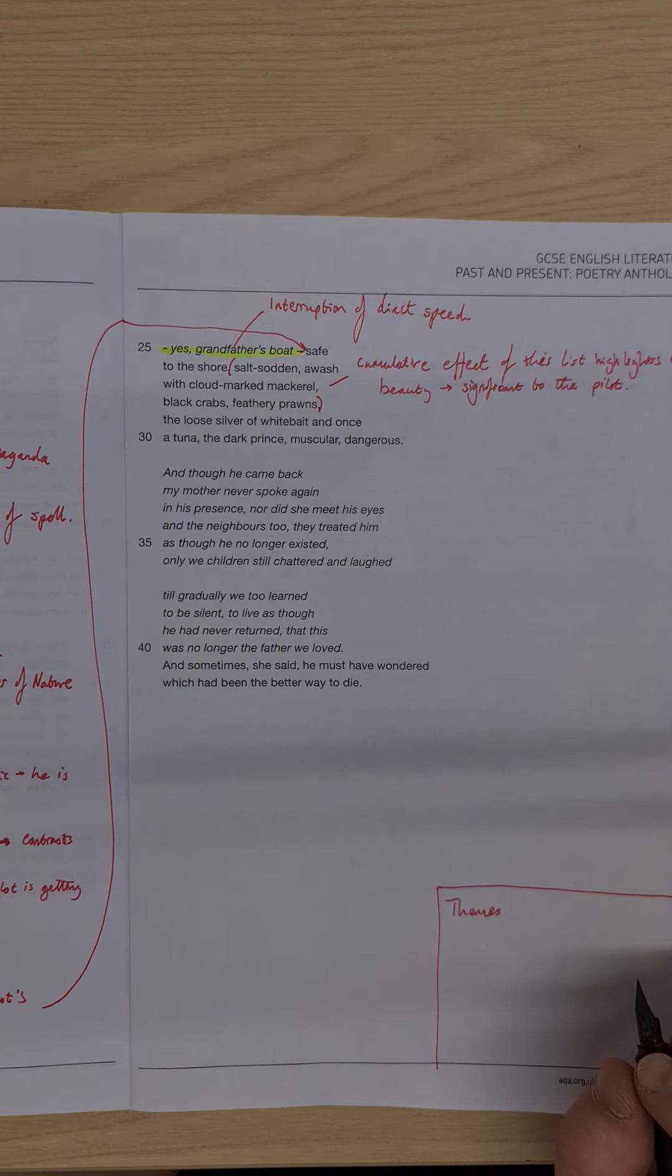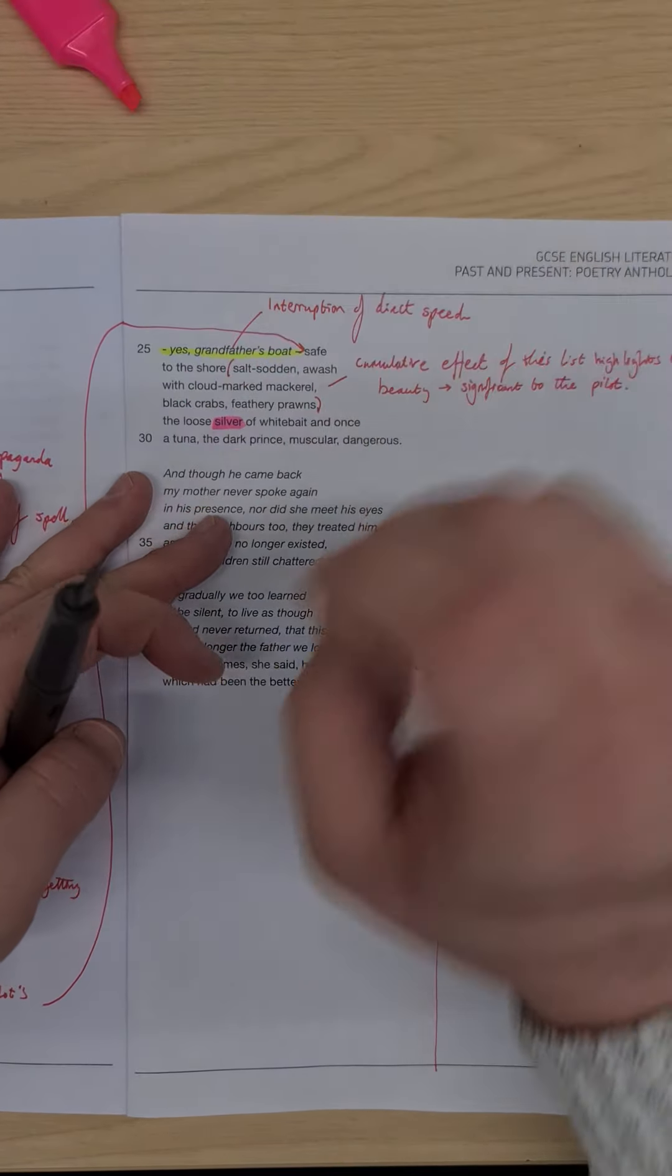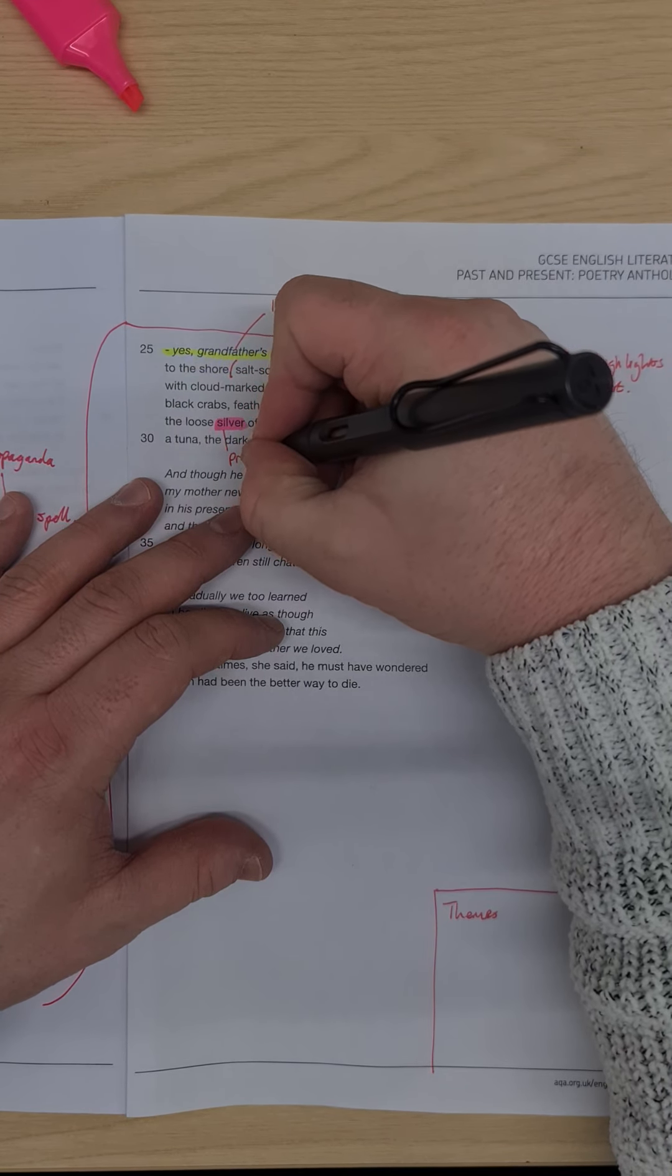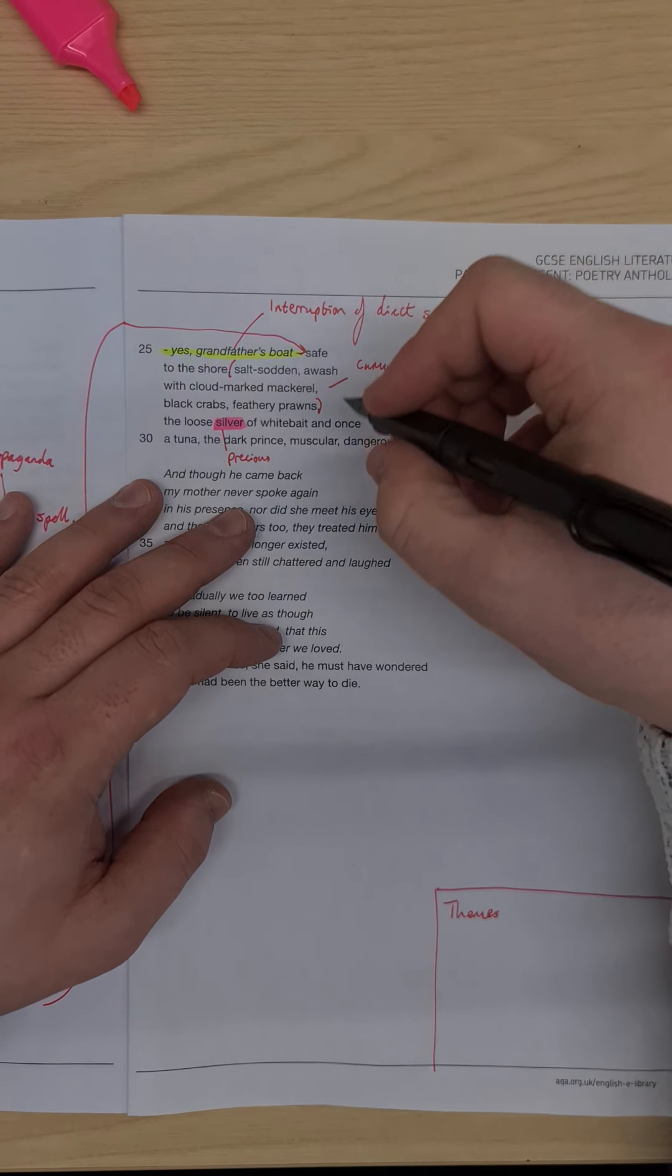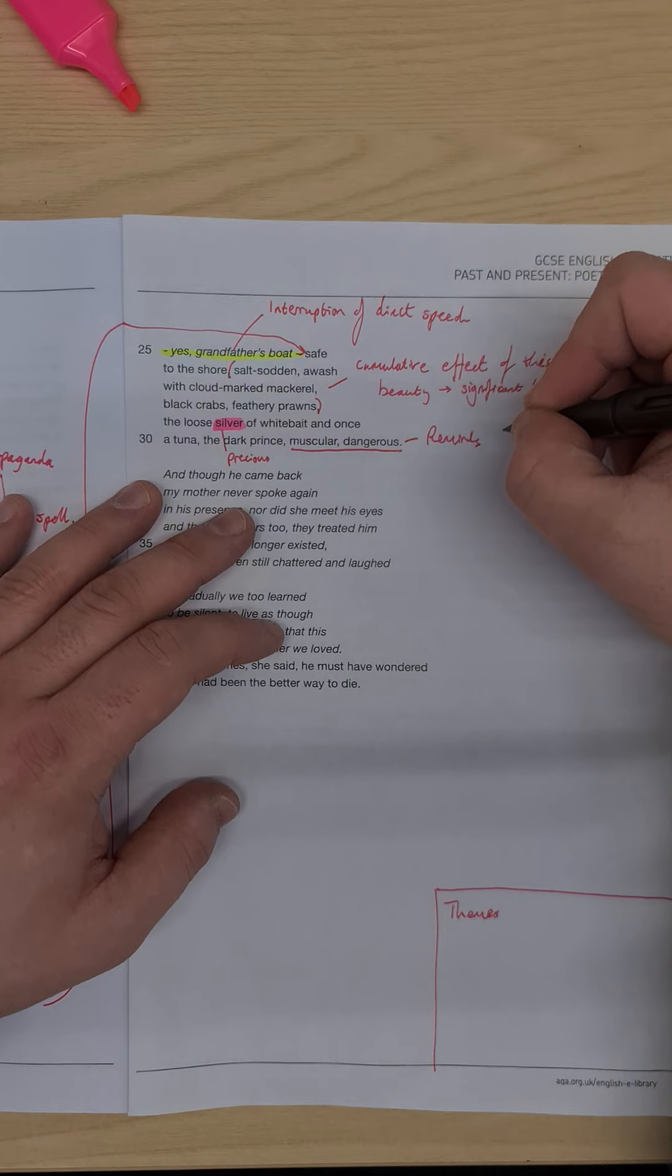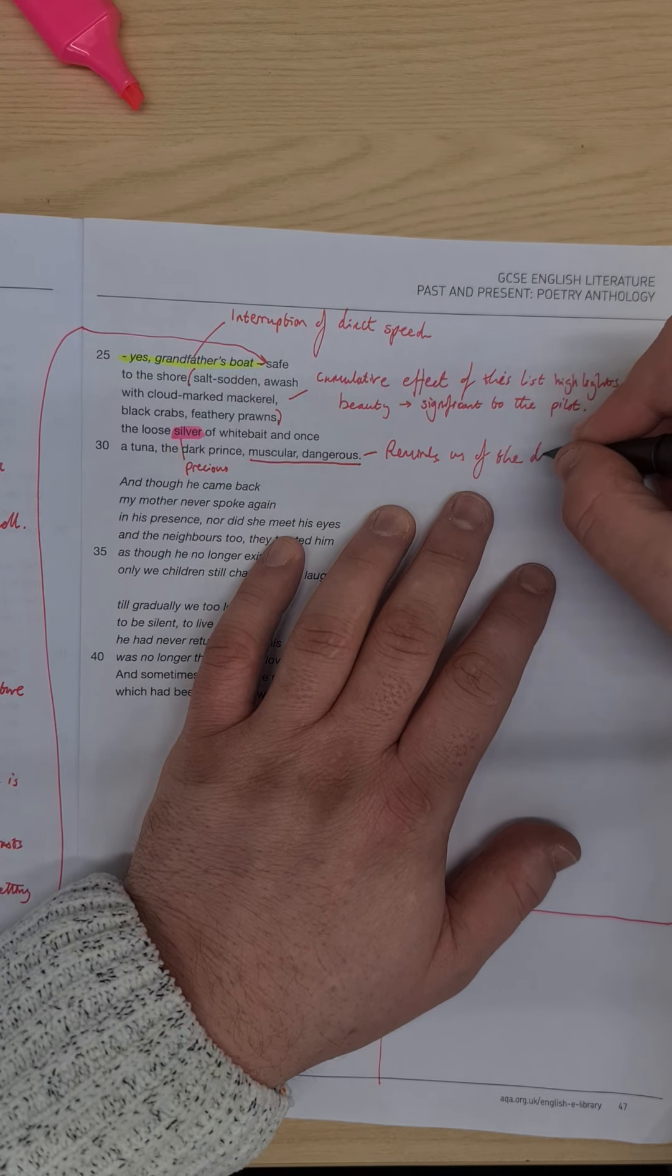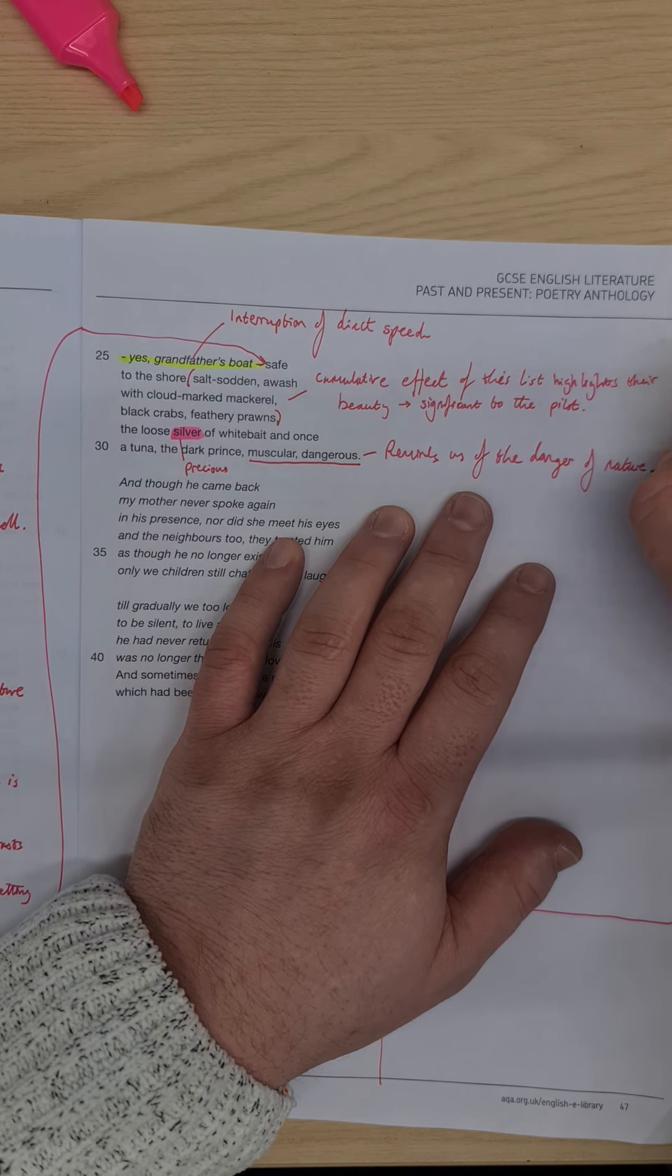The loose silver of white beard and we have again this mention again of silver, and it just makes it sound precious. And then finishing off here, describing the tuna as muscular and dangerous reminds us of the danger of nature.